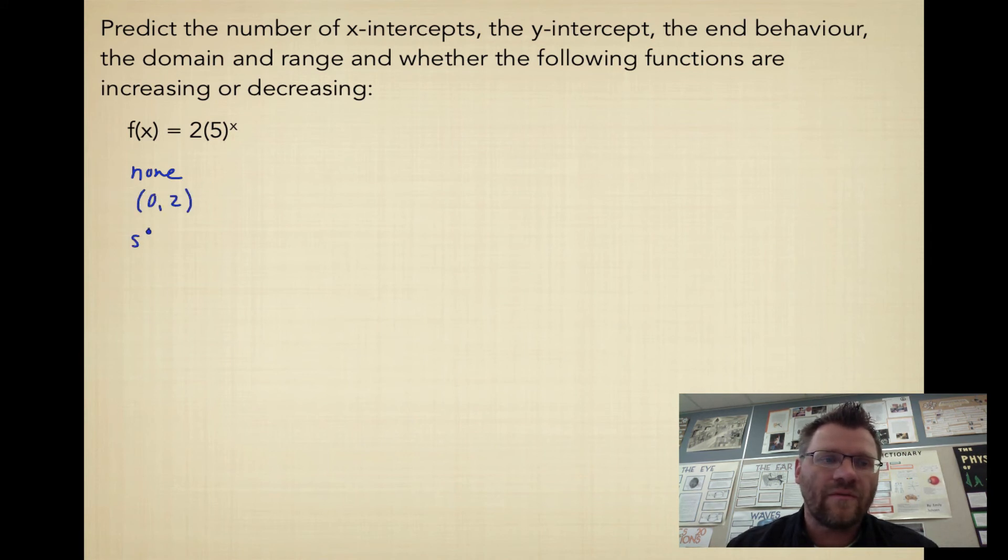The end behavior, well it starts in quadrant 2 and it ends in quadrant 1 because by now you need to know that exponential functions either look like this or they look the other way. The domain and range, if this is the look of this function, the domain is x∈R because it goes forever from left to right. And the range is everything greater than 0, y∈R. And is it increasing or decreasing? Well, from left to right, this thing is increasing.